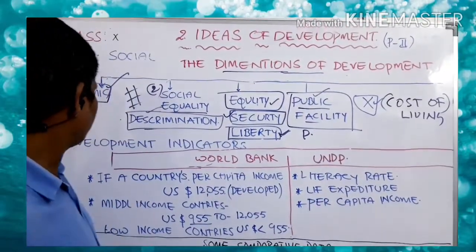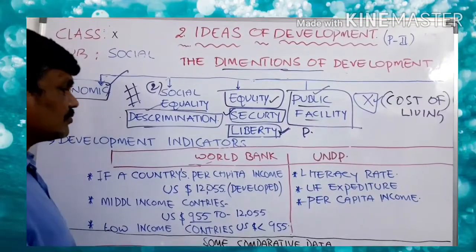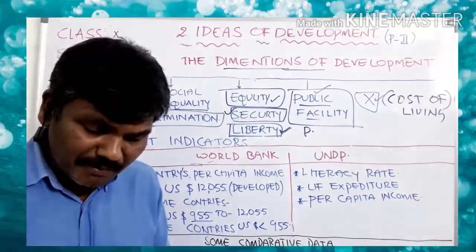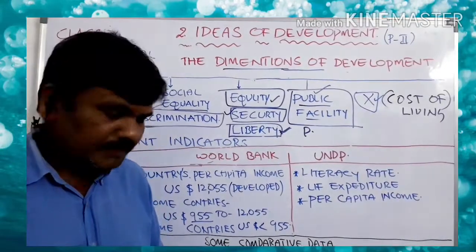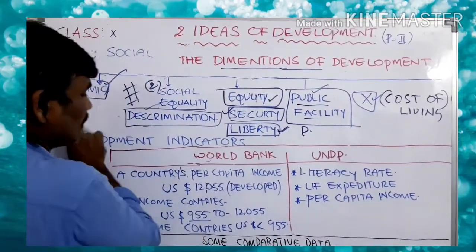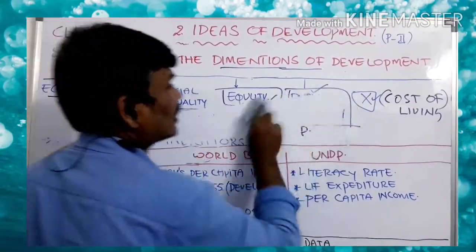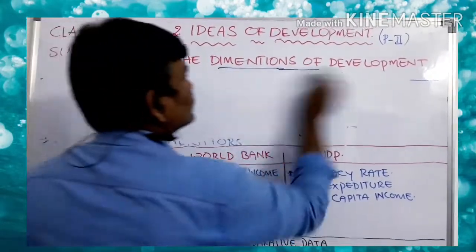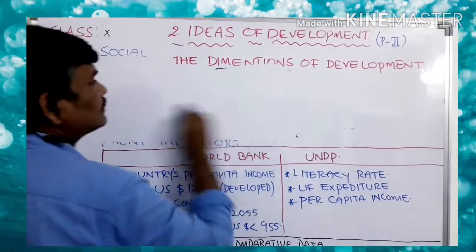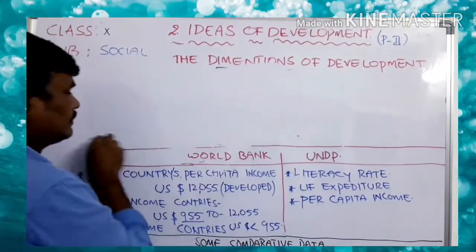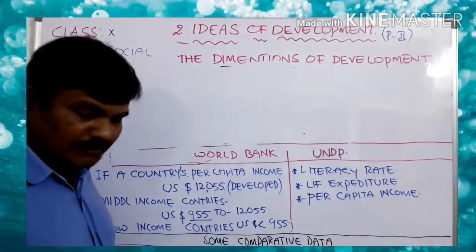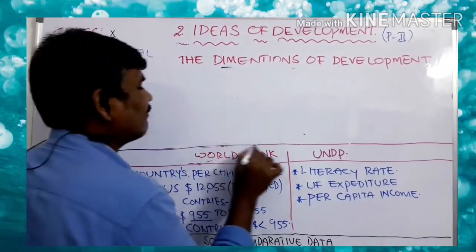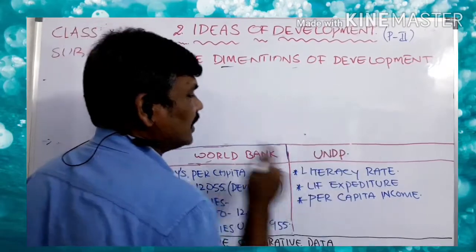Now, development is measured by two organizations: the World Bank and UNDP — United Nations Development Programme.